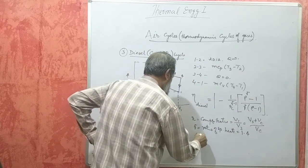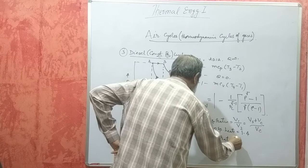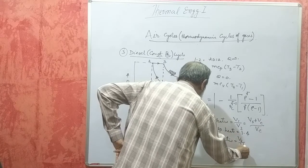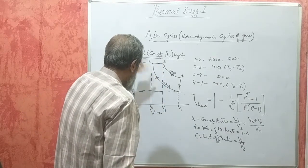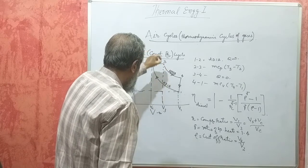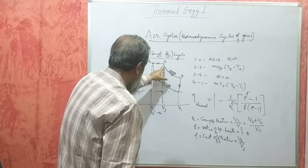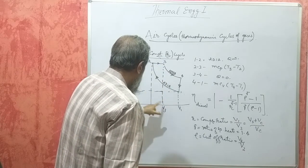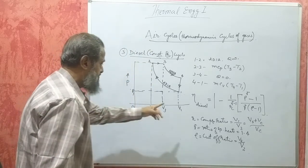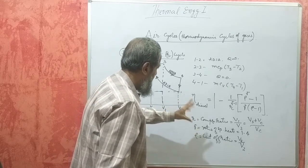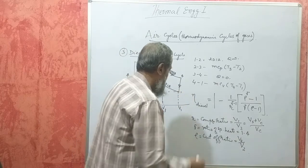Rho is called the cutoff ratio, that is V3 by V2 — the volume inside the cylinder when injection begins divided by the volume at the point where injection is cut off at point 3. This gives you the air standard efficiency, also called the theoretical thermal efficiency of the Diesel cycle.